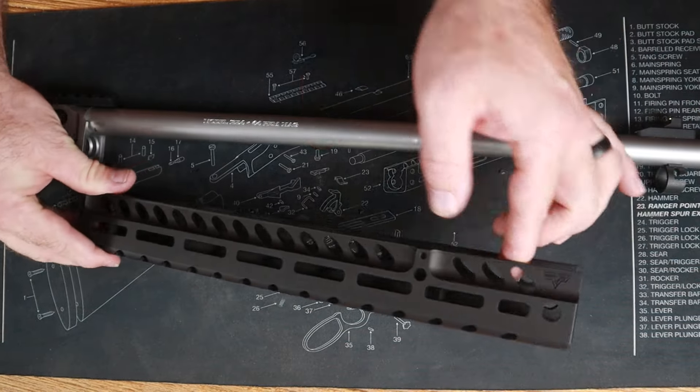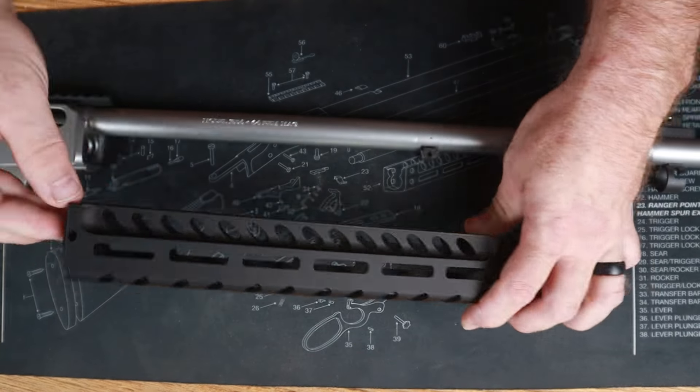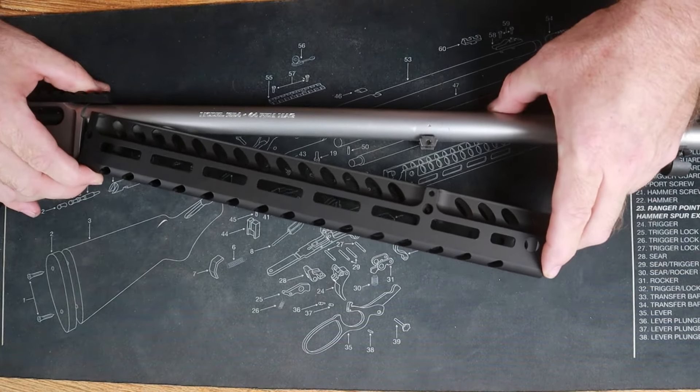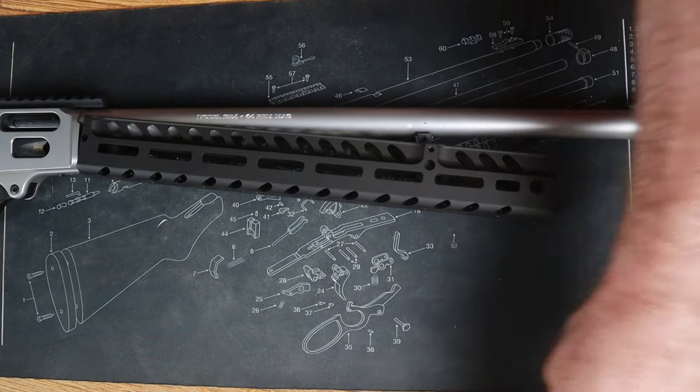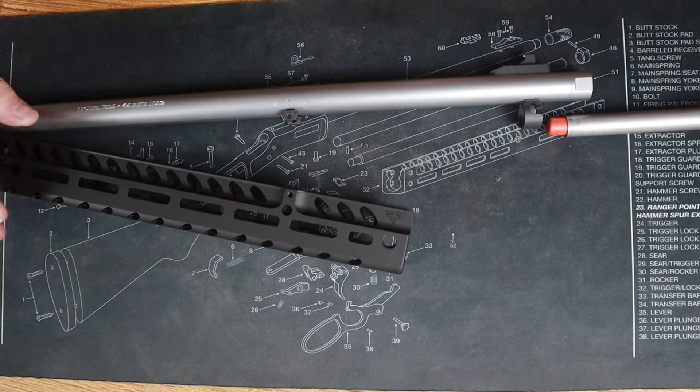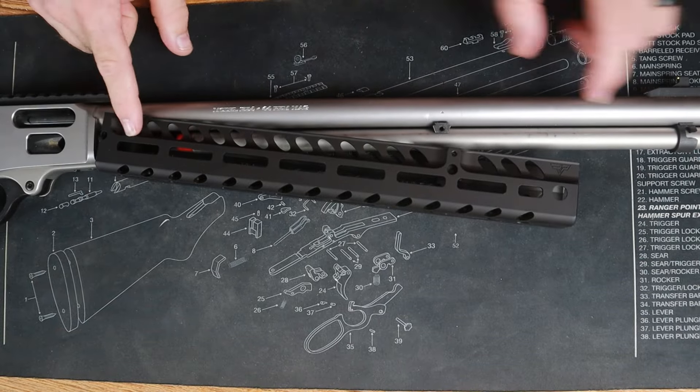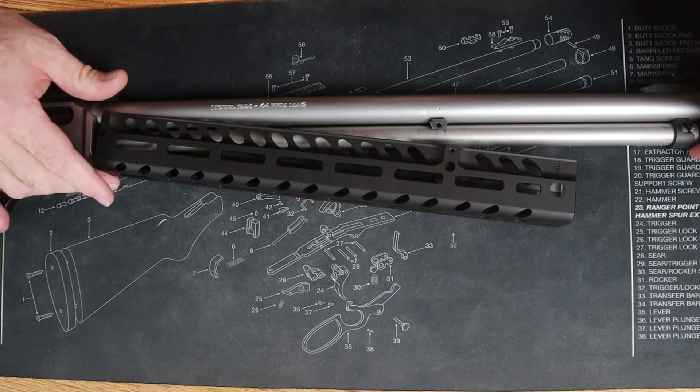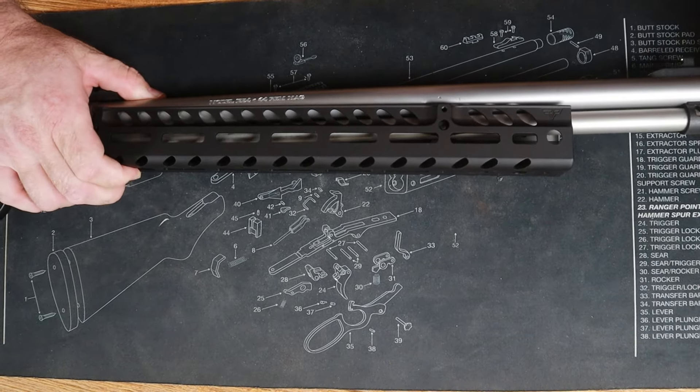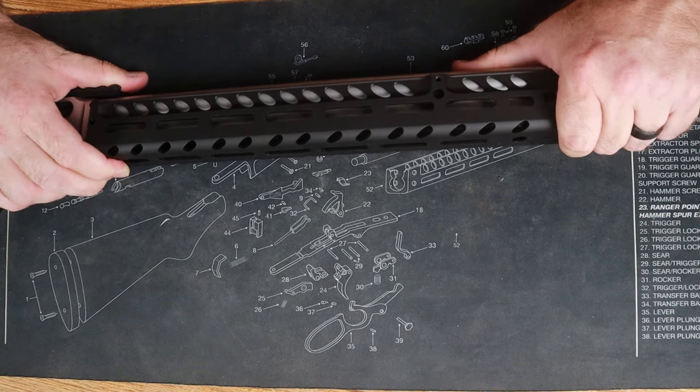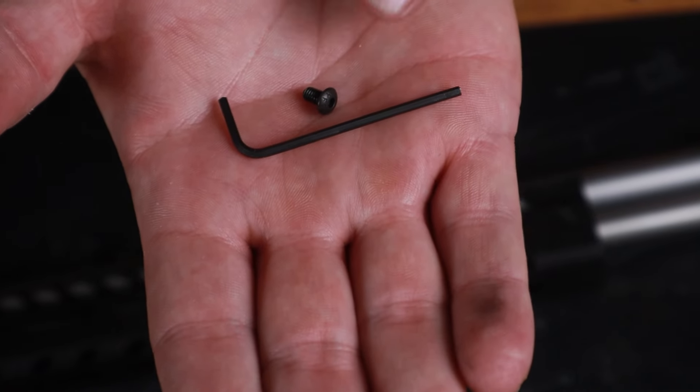So let's take our handguard, remembering that the open end faces the muzzle and the flanged end faces the receiver. Now this is incredibly simple. Let's just go ahead and line that up there. Then we're going to take our magazine tube and reinsert it. It is going to go through the back of the handguard here. Boom, that locks up there. We go, that lines up.